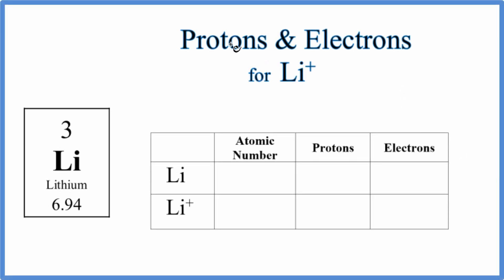In this video we'll find the number of protons and electrons for Li+, the lithium ion. We'll start out by finding lithium here on the periodic table. This is neutral lithium, it doesn't have a plus or minus charge after it.